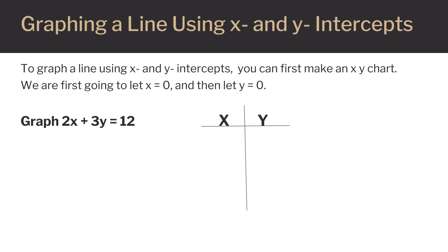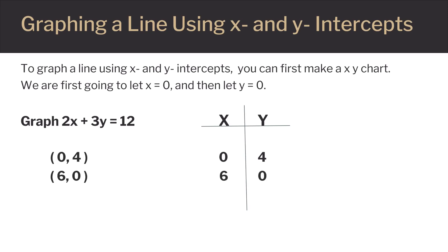To graph a line using the x and y intercepts, you can first make an xy chart. You let x equal 0 and then y equal 0. When x equals 0, we found y equals 4, so we write in (0, 4) on our chart. When y equals 0, we found x equals 6, so we write in (6, 0). Now we have 2 points — (0, 4) and (6, 0) — and we're ready to graph our line.